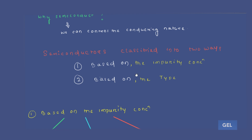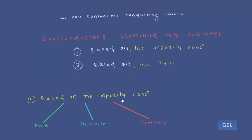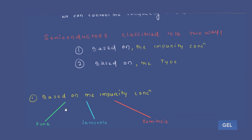Semiconductor classification is divided into two ways. Based on impurity concentration, it is divided into three categories: pure, intrinsic, and extrinsic. But based on the type of semiconductor, it is divided into two categories. Let's first understand the impurity concentration classification.